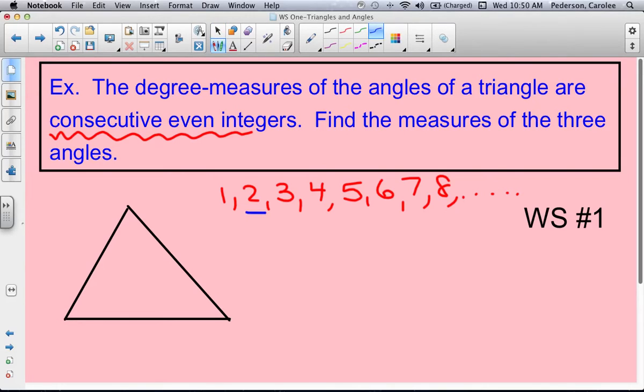Here's my even numbers: two, four, six, eight. Consecutive, I'm just going to pick the first three consecutive numbers, are two, four, and six.